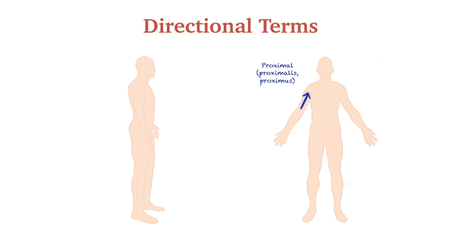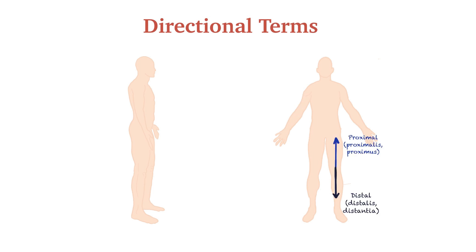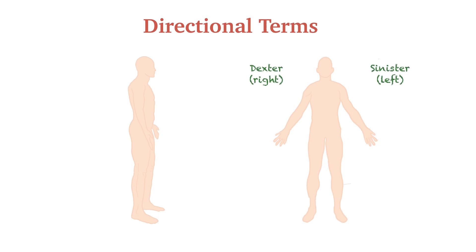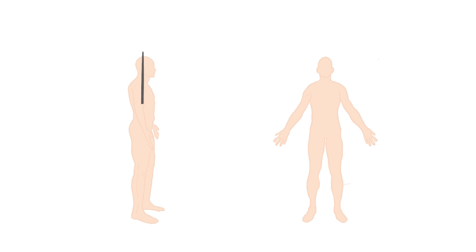Proximal describes a position in a limb that is closer to the point of attachment or the trunk of the body — near to the trunk or point of origin. Distal describes a position in a limb that is farther from the point of attachment or the trunk of the body — away from the trunk. For example, the foot (pedis in Latin) is distal to the leg (crus in Latin). In Latin, right means dexter and left means sinister. Cranial means top of the head, and caudal means tail — showing the inferior part of the body.